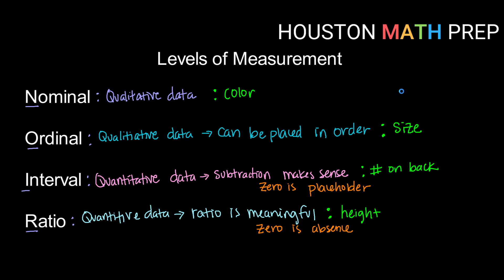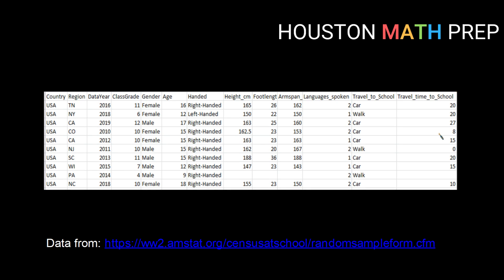We're going to return to our dataset from the qualitative and quantitative video and take each data point and talk about its level of measurement. Country is qualitative data, so it might be nominal or ordinal. We ask: does it make sense to put countries in order? No — a country is just a category, so this is nominal data. Similarly, region is qualitative data; because we can't put the regions in any meaningful order, that is also nominal data.